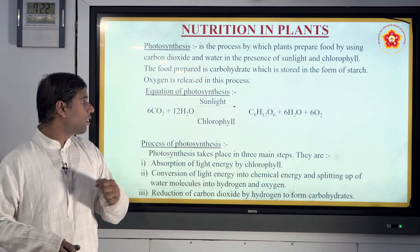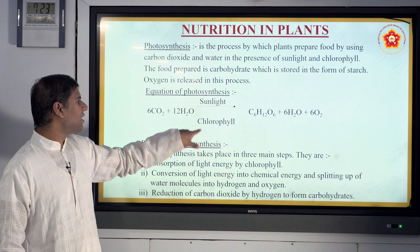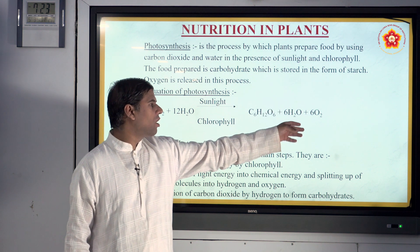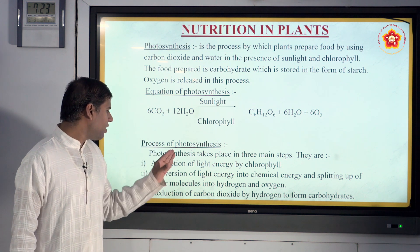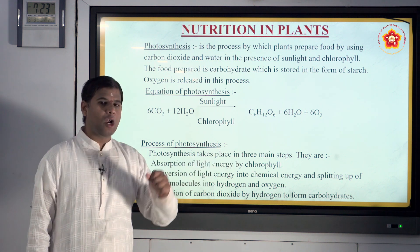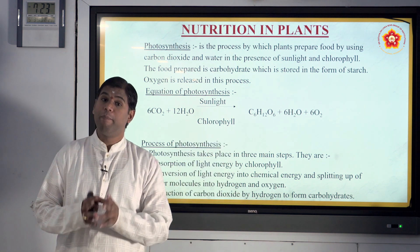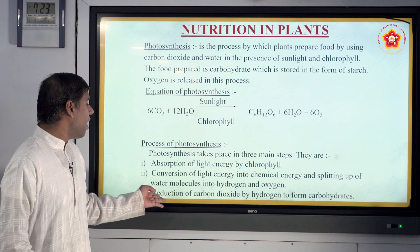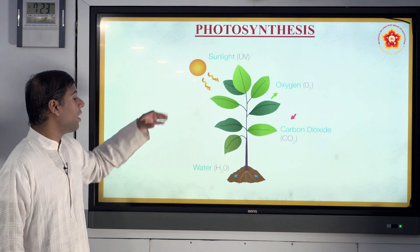The equation for photosynthesis is: carbon dioxide + water, in the presence of sunlight and chlorophyll, produces glucose (starch) + water + oxygen. Photosynthesis takes place in three steps: absorption of light energy by chlorophyll, conversion of light energy into chemical energy by splitting water molecules into hydrogen and oxygen, and reduction of carbon dioxide by hydrogen to form carbohydrates.